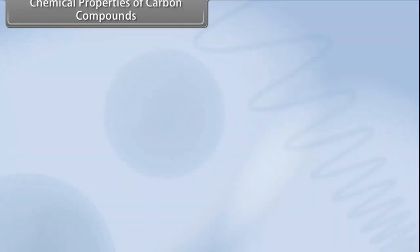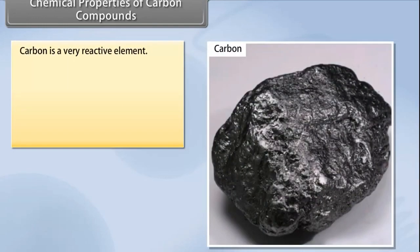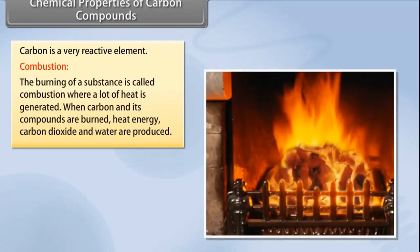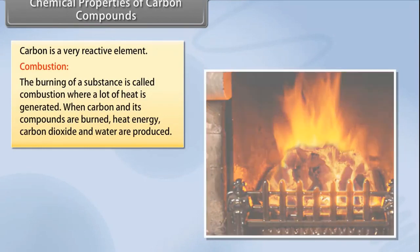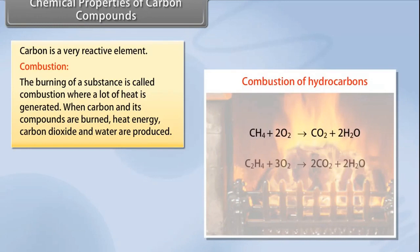Chemical properties of carbon compounds. Carbon is a very reactive element. Main chemical properties are listed. Combustion: The burning of a substance is called combustion. It is a process that generates a lot of heat. When carbon and its compounds are burnt, heat energy, carbon dioxide, and water are produced.